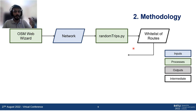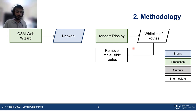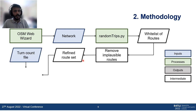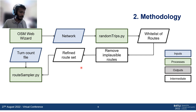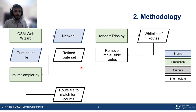There could be some implausible routes, so we calculate an implausibility score and based on that, edges with a higher implausibility score are removed at this stage, giving us a refined route set. We then use that refined route set with the turn count file mentioned earlier. Using another SUMO process called Route Sampler, we get a route file that matches the turn count — essentially a calibrated traffic route file where at each intersection the routes exactly match the traffic counts.